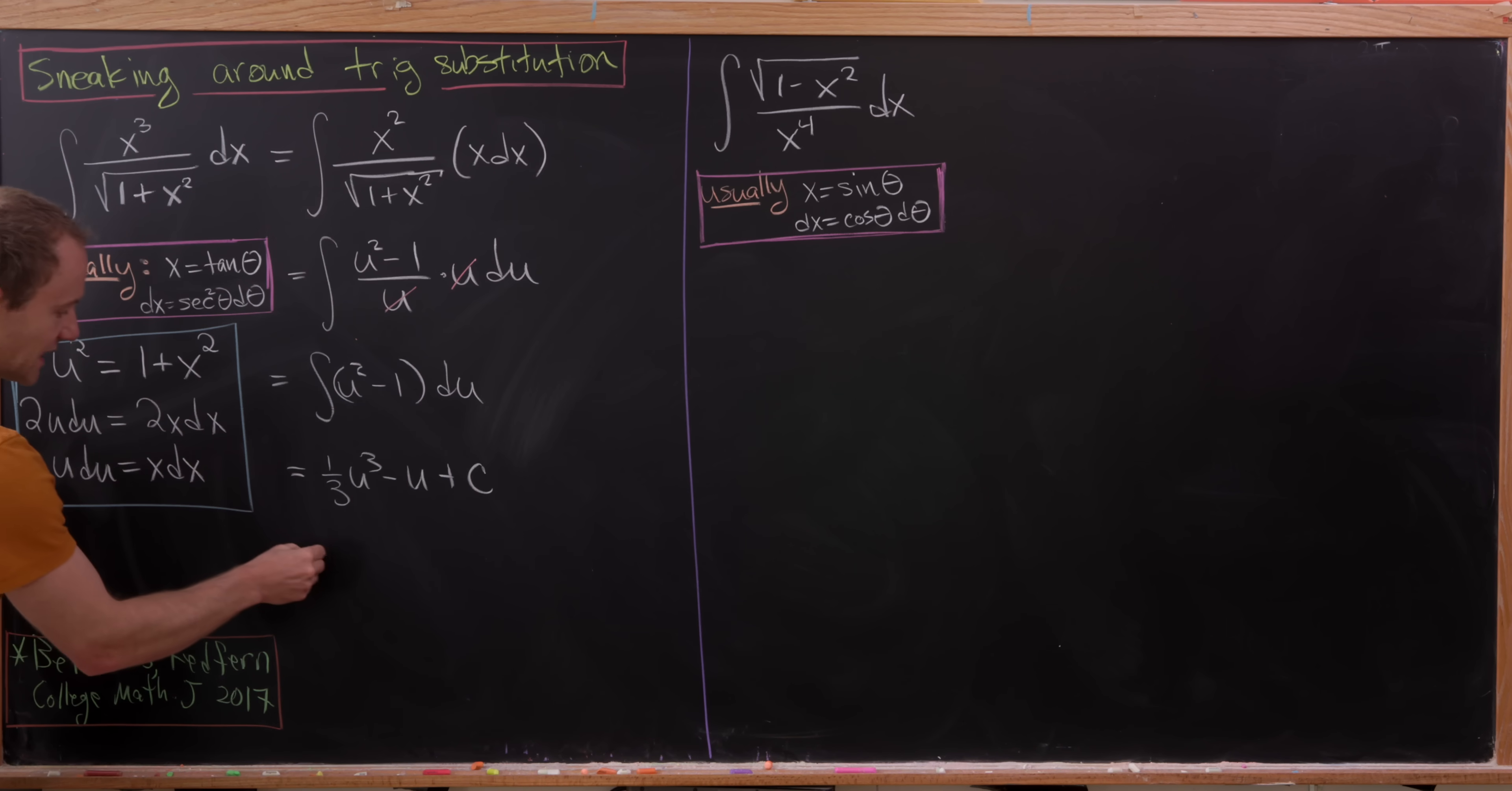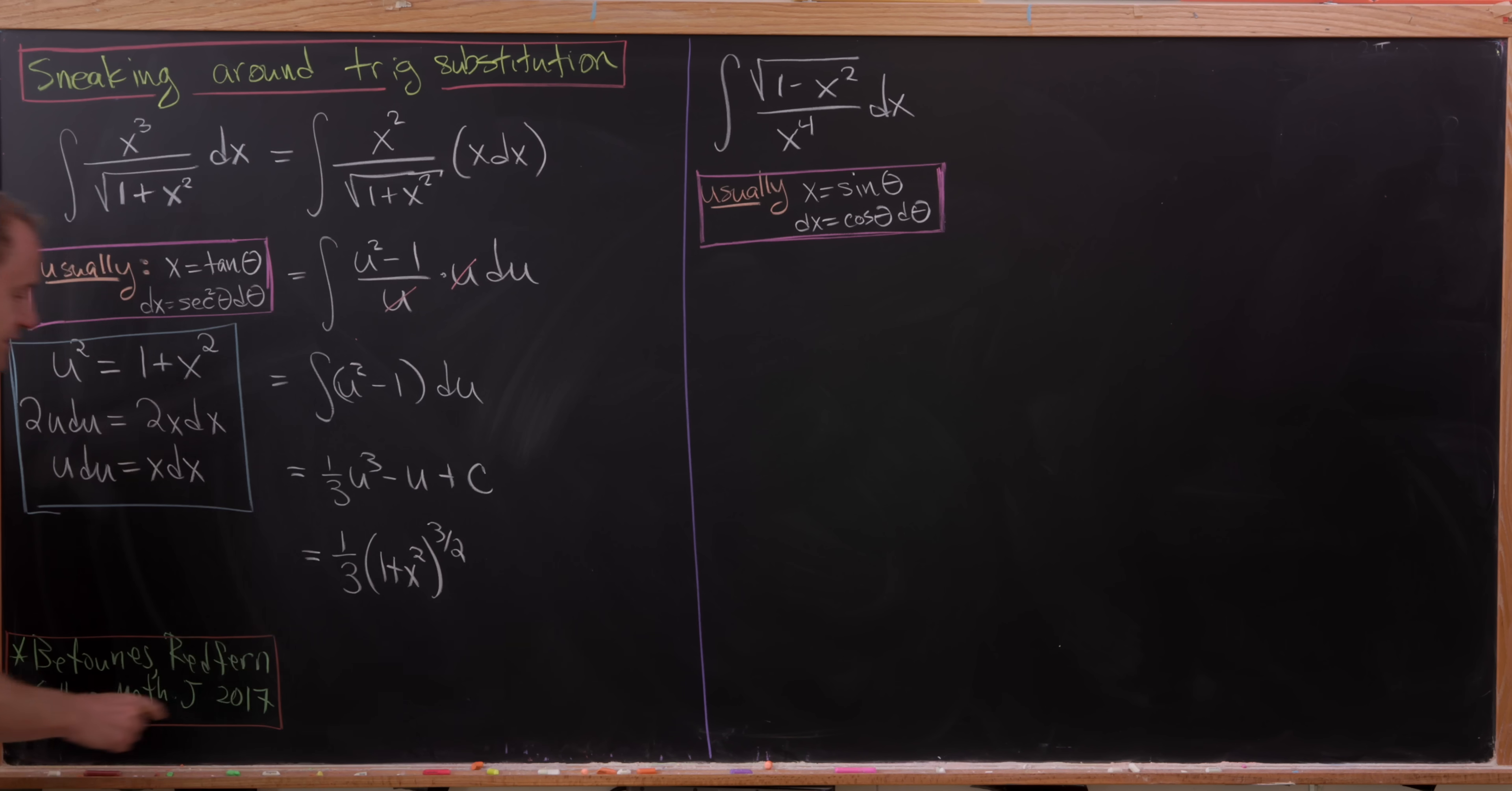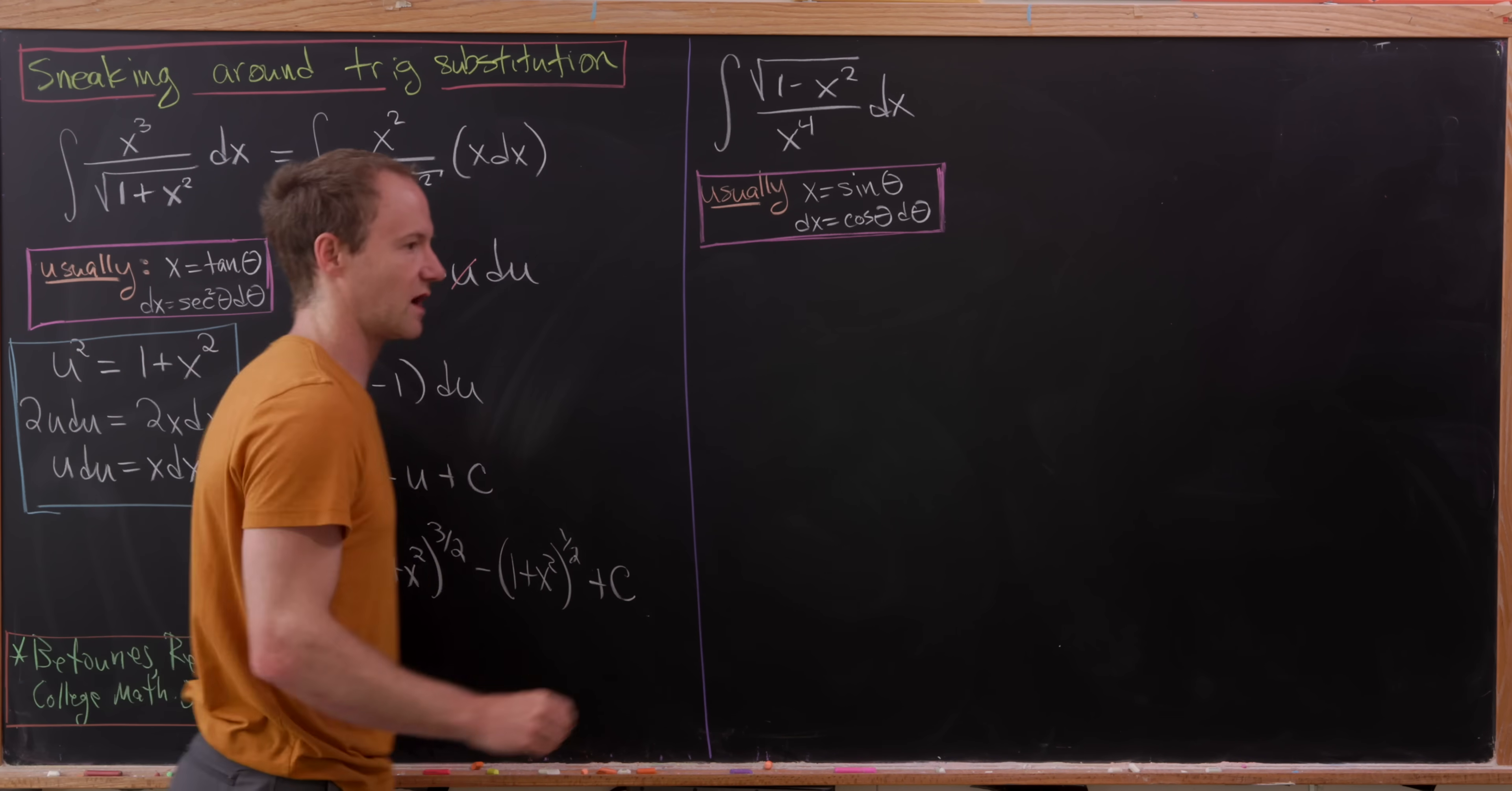Substituting back in, what will we have? Well, we're going to have 1 third and then 1 plus x squared to the 3 halves. That's our u cubed term. And then minus 1 plus x squared to the 1 half and then plus a constant.